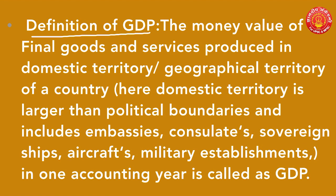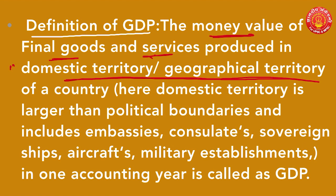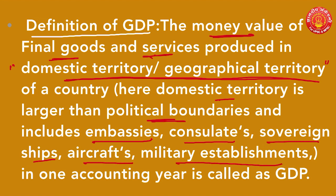We are going to study GDP in very simple language. The definition of GDP is: the money value of all final goods and services produced in the domestic territory or geographical territory of a country. These two words — domestic territory and geographical territory — are used interchangeably. Here, remember that domestic territory is larger than political boundaries, and it includes embassies, consulates, sovereign ships, aircraft, and military establishments.